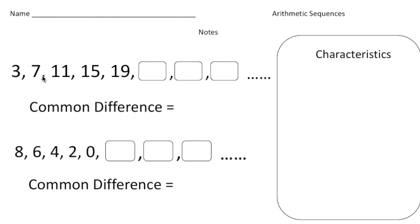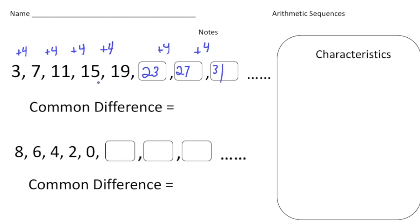These numbers are increasing by 4 — so plus 4 from 3 to 7, plus 4 from 7 to 11, plus 4 from 11 to 15, and plus 4 from 15 to 19. Based on that consistent rule, the next number is 19 plus 4, which is 23. Add 4 to that and we get 27, then 31.